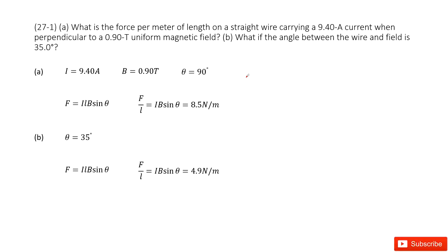So the given quantities are: the current is 9.4 amps, the magnetic field B is 0.9 T, and the angle theta for the current and the magnetic field is 90 degrees. This tells us they are perpendicular. So the keyword perpendicular tells us theta is 90 degrees.